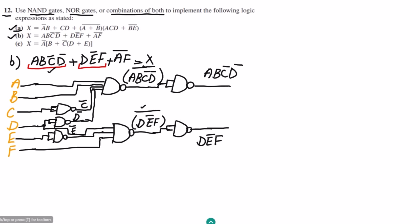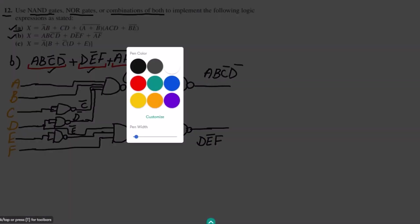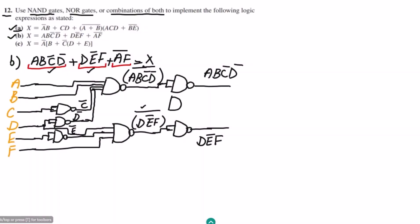For the third product term (AF)', I use a two-input NAND gate with inputs a and f directly. The output of this gate is (AF)' — which is already in the required complemented form, so no additional inverter is needed. That is the third product term.